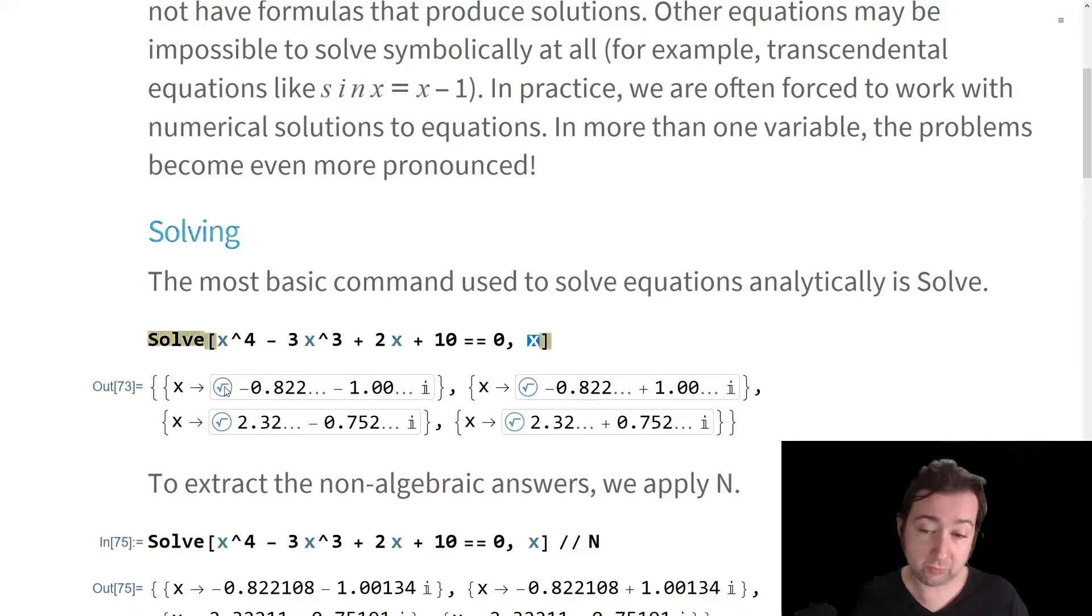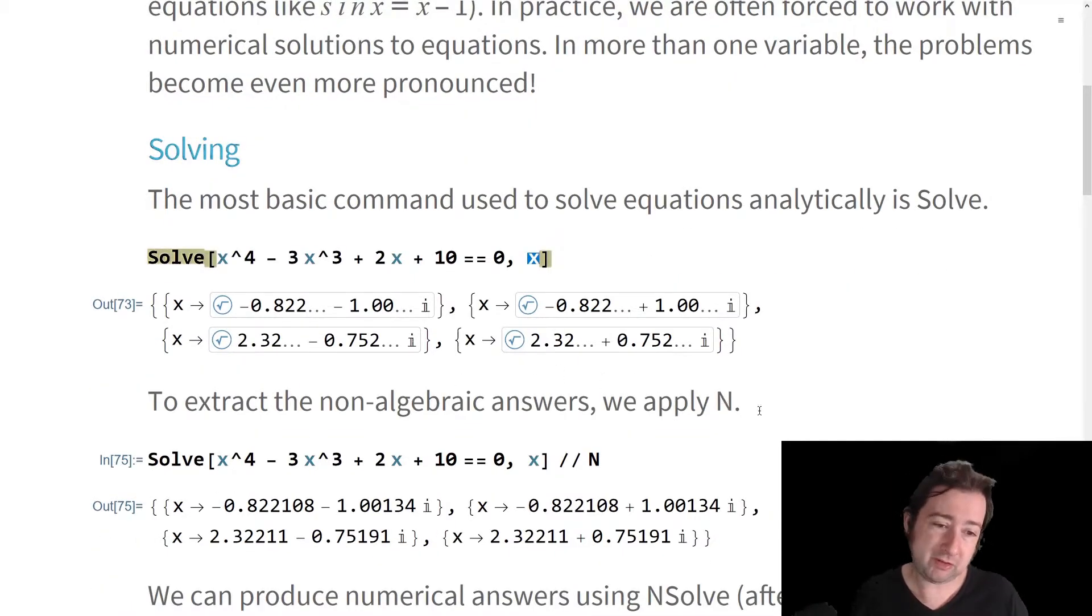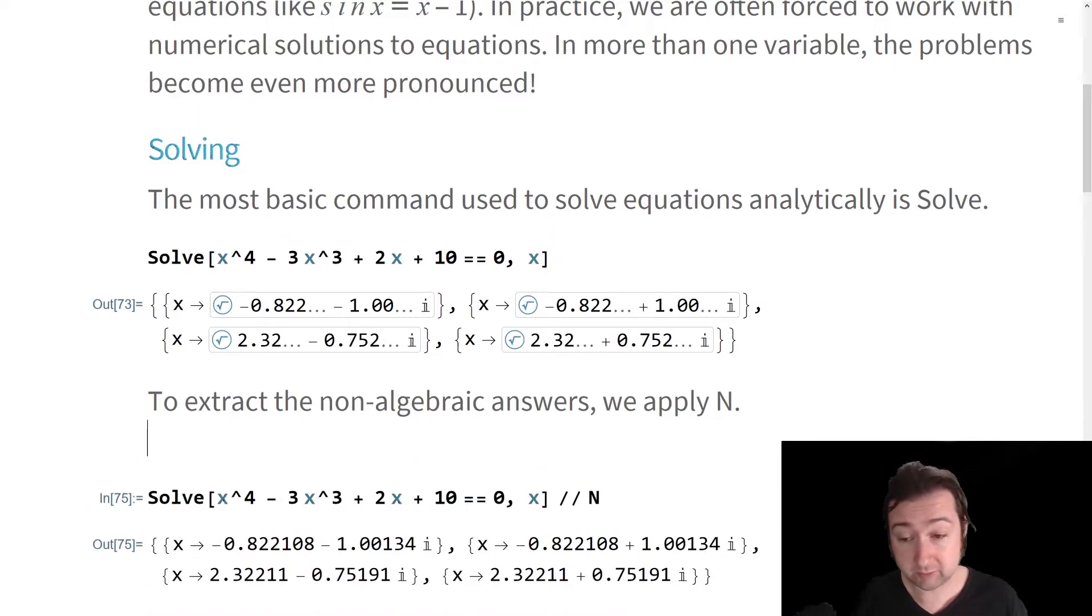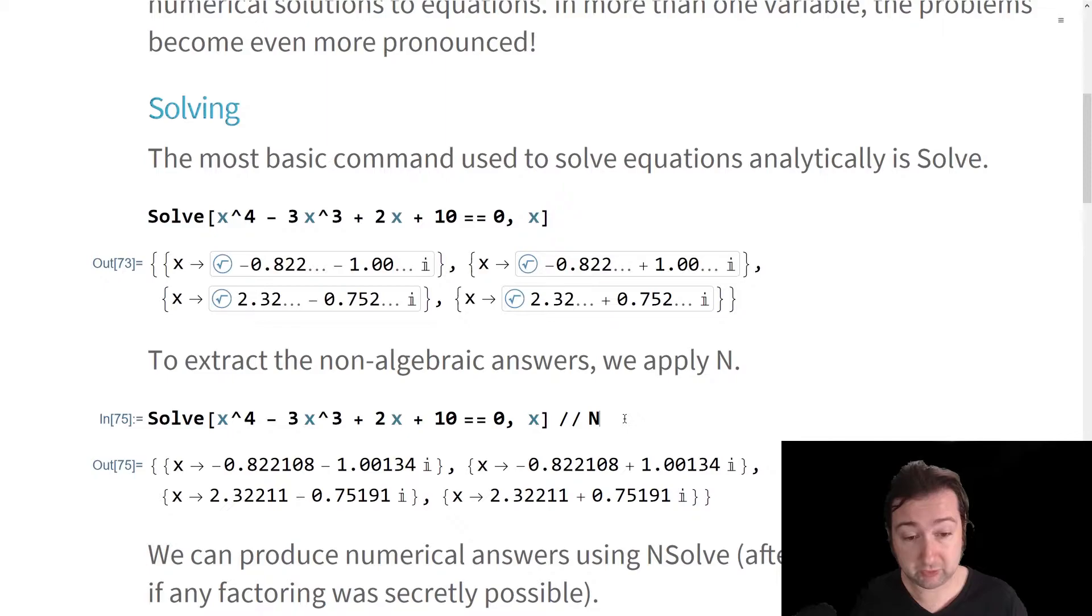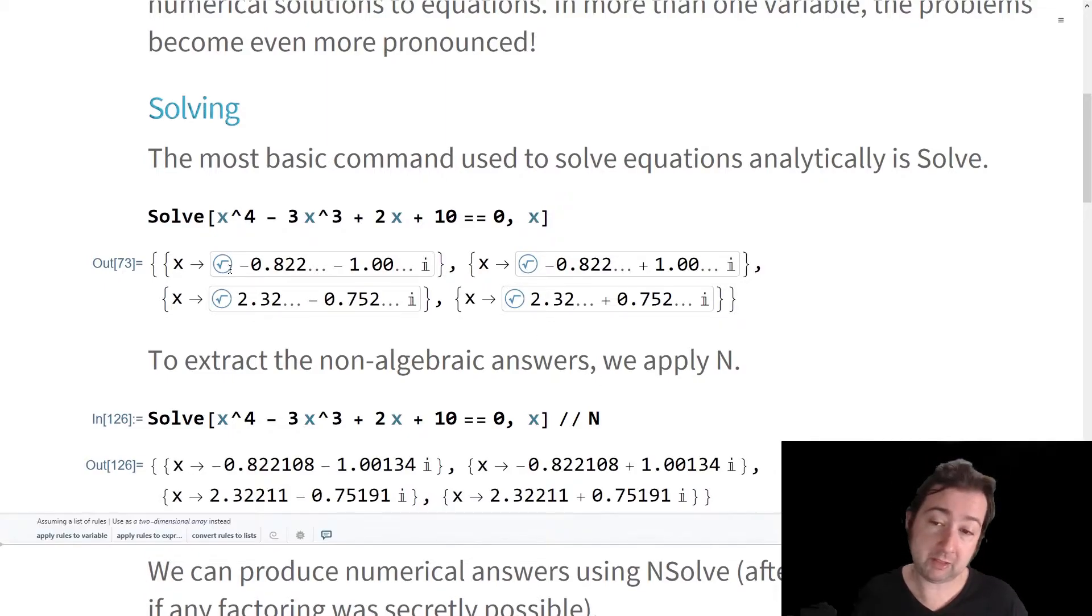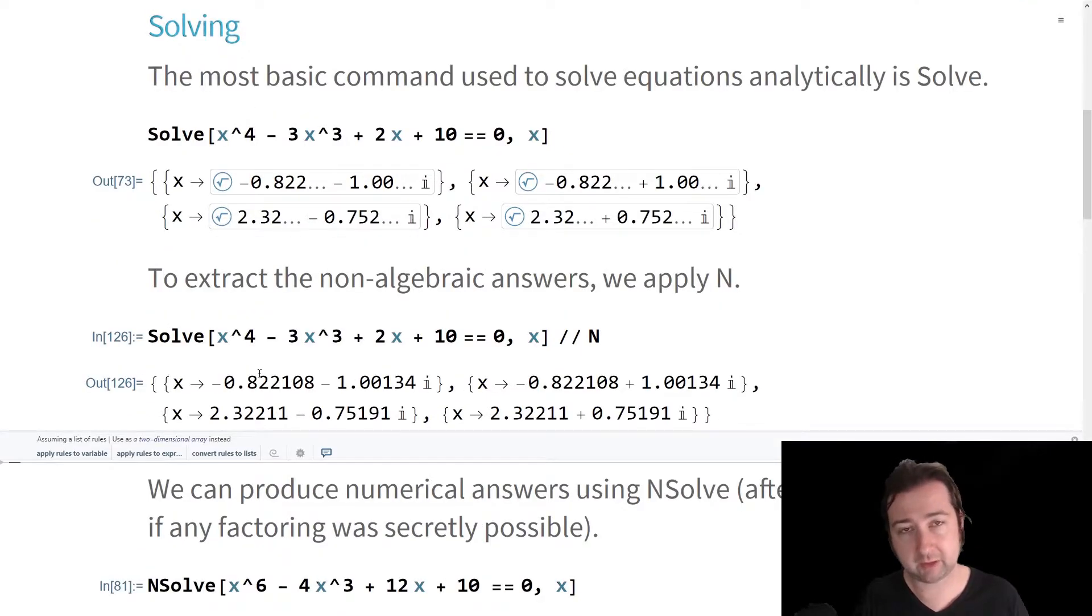If an equation like this comes out with expressions that look like this as the answers, there are not algebraic expressions that easily solve it. You get these rules and these root expressions on the inside. You can extract the non-algebraic answers or numeric answers by just applying N. If you feed that thing into N, then what you get out is the evaluation in terms of the decimals they represent. In this case, we've got complex numbers, two complex roots here.